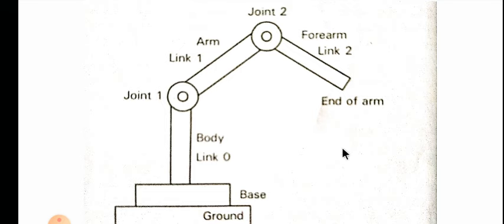A robot can be reprogrammed, and another important point is that its parts can be replaced when damaged. If parts are damaged you can replace them, whereas in human beings you can replace a part but the efficiency will not be there. For example, if a person loses a hand, you can replace it but the efficiency will not be the same. That's why industries are looking for robots instead of human beings.